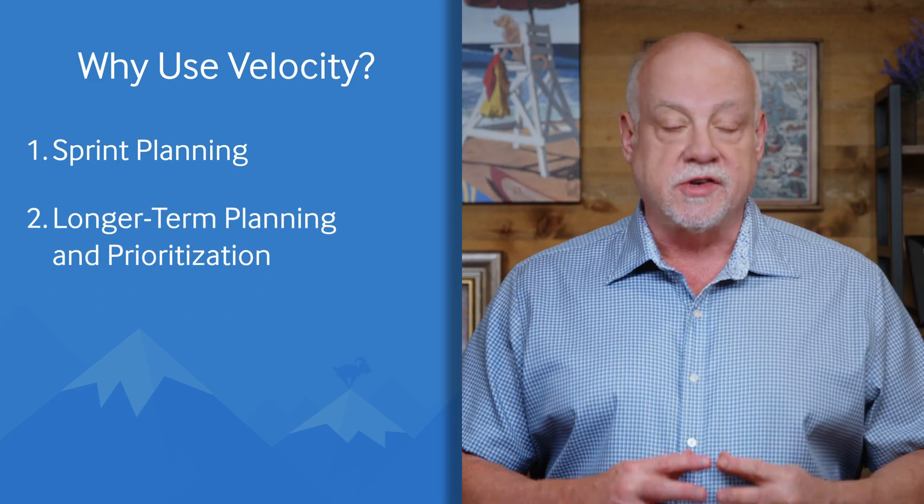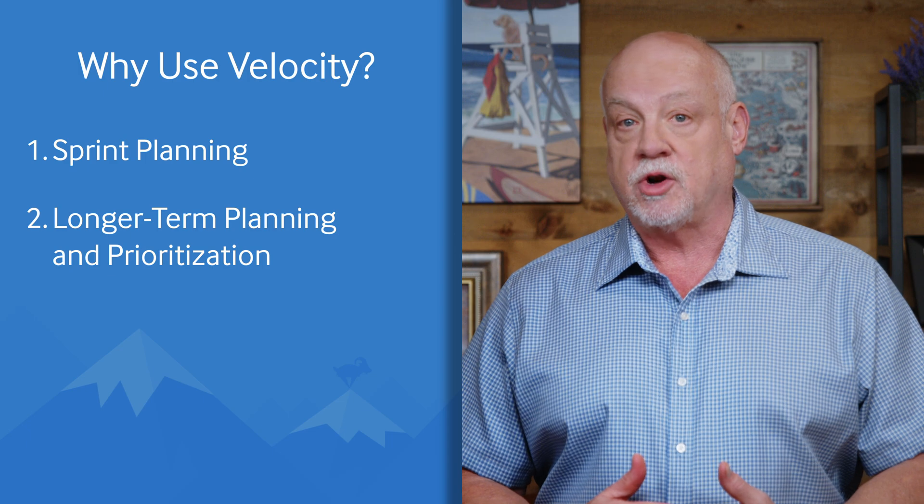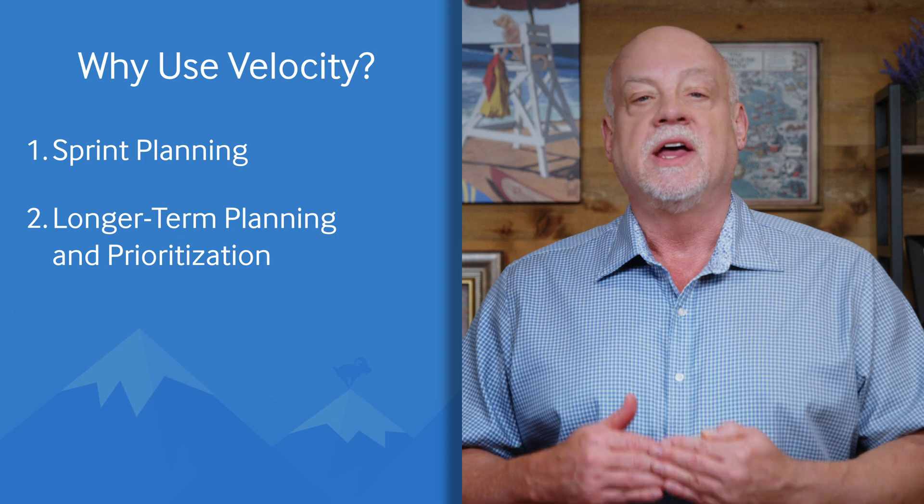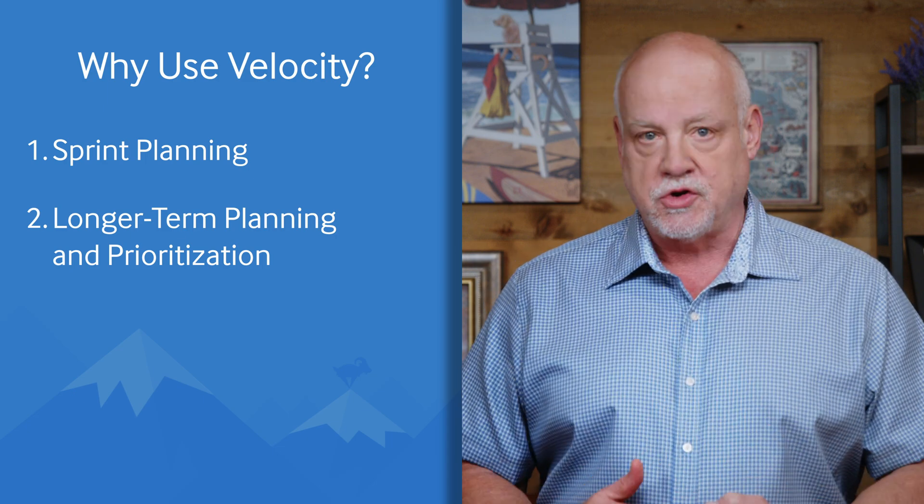Velocity can also be used for planning further ahead than the next sprint. Using its average velocity, a team can provide a rough estimate of how much it can deliver in any given number of future sprints. It's wise to use a velocity range rather than a single value. For example, if a team's average velocity is 20, it would be safer and more accurate to use a range such as 16 to 23. Using this velocity range, a team could forecast that in five sprints they will deliver between 80 and 105 units of work.